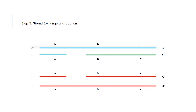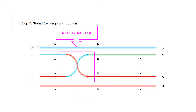Here we have strand exchange. This can happen because the sequence of genes is so similar between the two chromosomes. This cross that happens is known as the Holliday junction — this is where the exchange of genetic material is occurring. We also have ligation, which is the formation of a phosphodiester bond here and here.